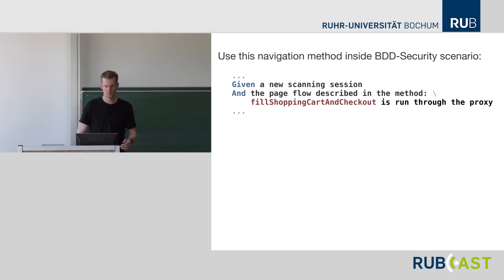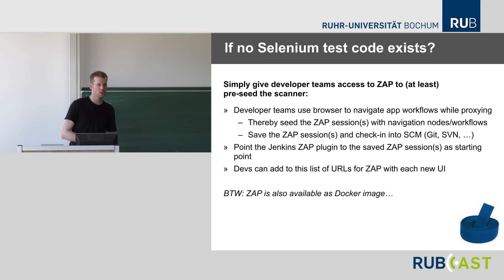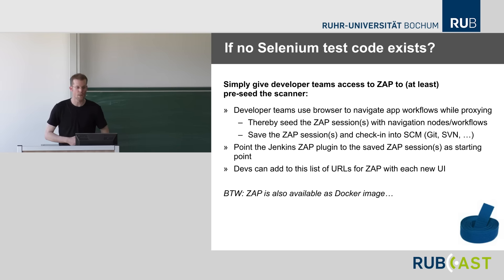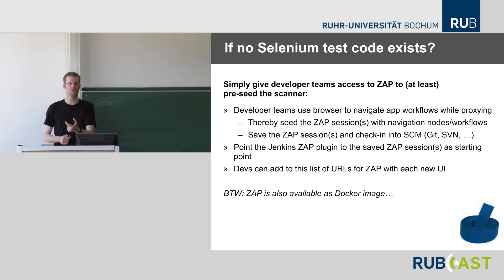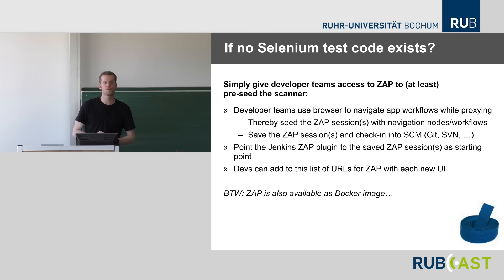If no Selenium test code exists, give developer teams access to ZAP so they can seed the scanner directly. For new dialogues or backend calls they're developing, they can use ZAP as a proxy, navigate once through all nodes of the application workflow they're developing, save that ZAP session file into the code repository, and the automated scan picks it up as a seed — seeing all workflow nodes and steps to actively scan during each nightly build, with no need for Selenium tests.